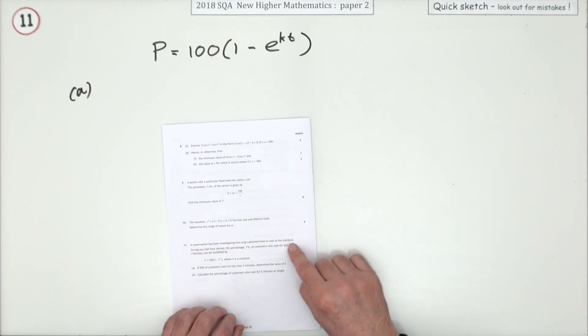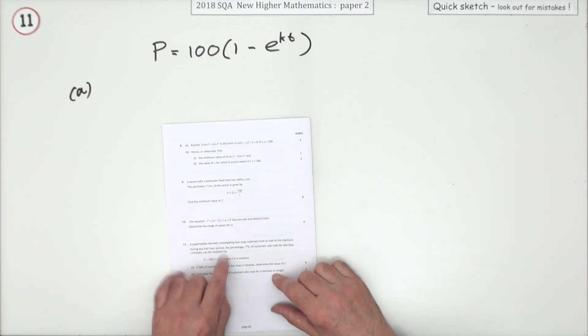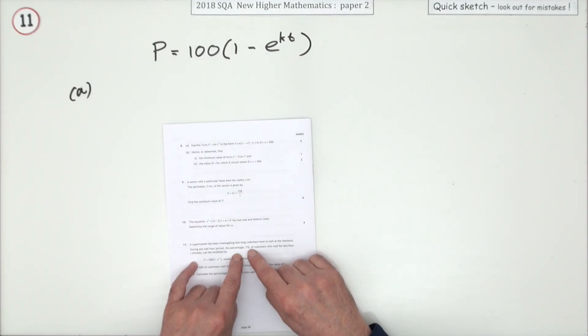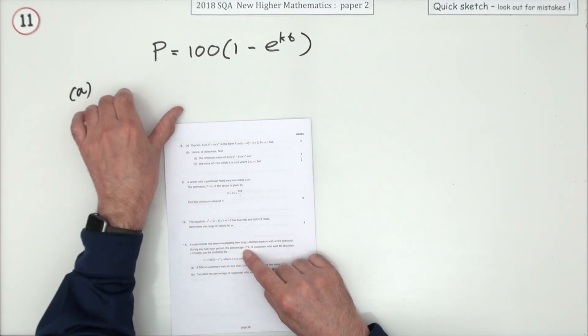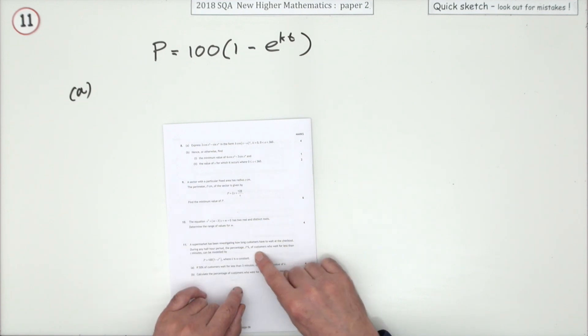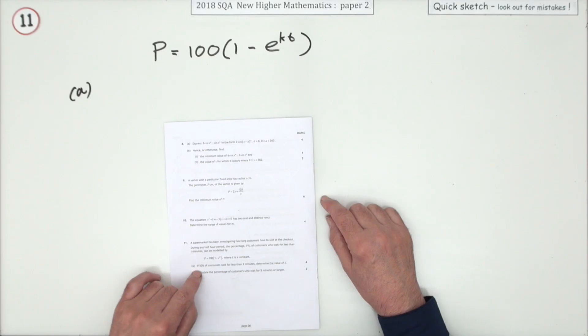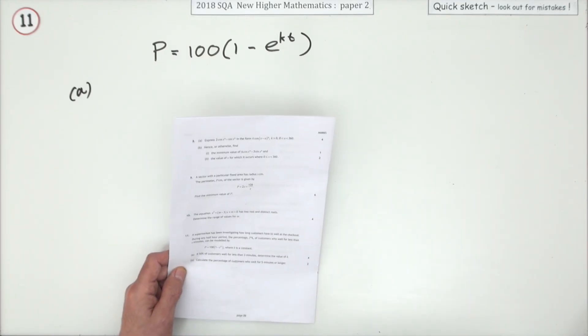The percentage P percent - notice P percent, that means P is the numerical part of the percentage - who wait for less than t minutes can be modeled by this. First part: if 50% of customers wait for less than three minutes, what's the value of k?